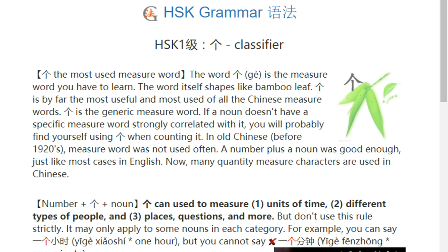Because even in this category, you can only apply 个 to some words. For example, you can say 一个小时 (one hour), but you cannot say 一个分钟 (one minute).